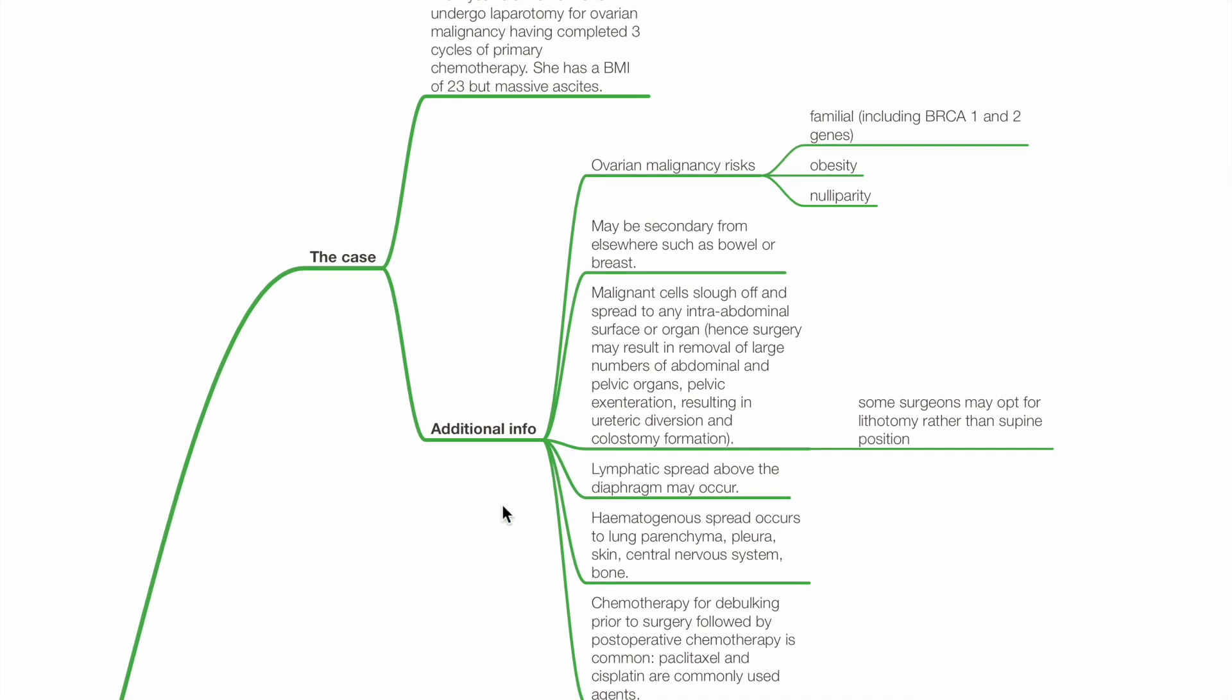Additional info. Ovarian malignancy risk includes familial, including BRCA1 and 2 genes, obesity and nulliparity. It may be secondary from elsewhere such as bowel or breast.